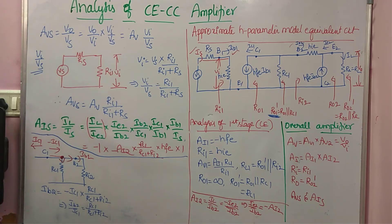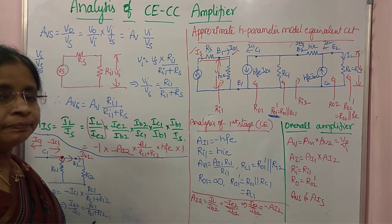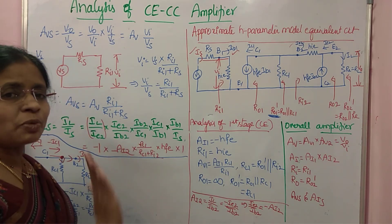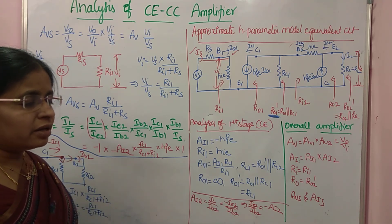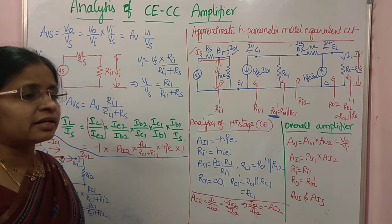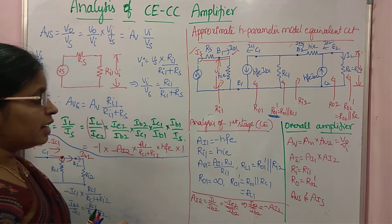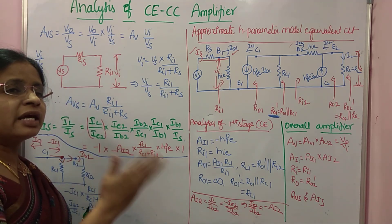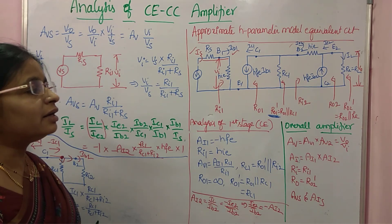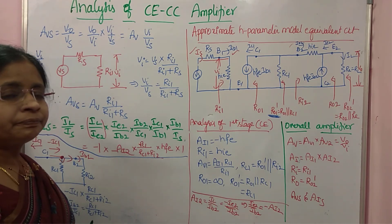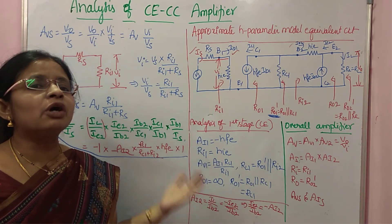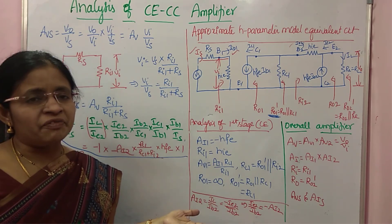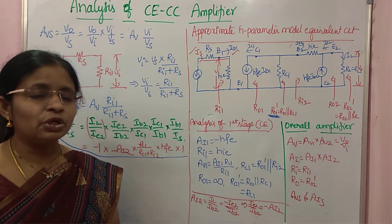So this is the full analysis of the CECC amplifier. When a problem gives resistance values and H-parameters, first derive the formulas, then substitute the given values to find voltage gain, current gain, input impedance, and output impedance. We are left with one major concept — the Darlington emitter follower circuit, which is again a two-stage amplifier. I will cover that in the next video. Thank you very much.